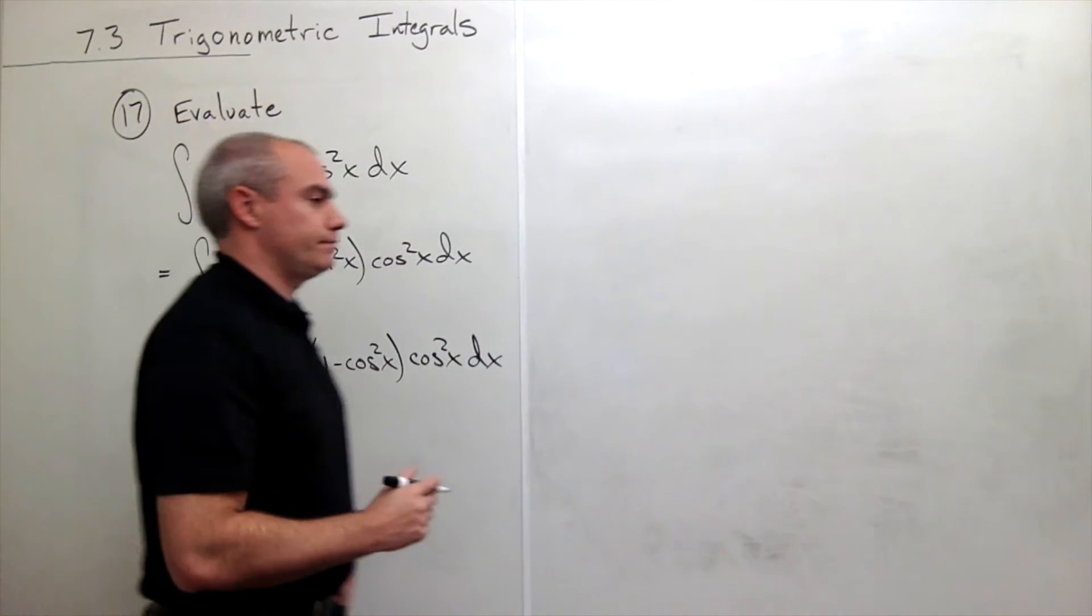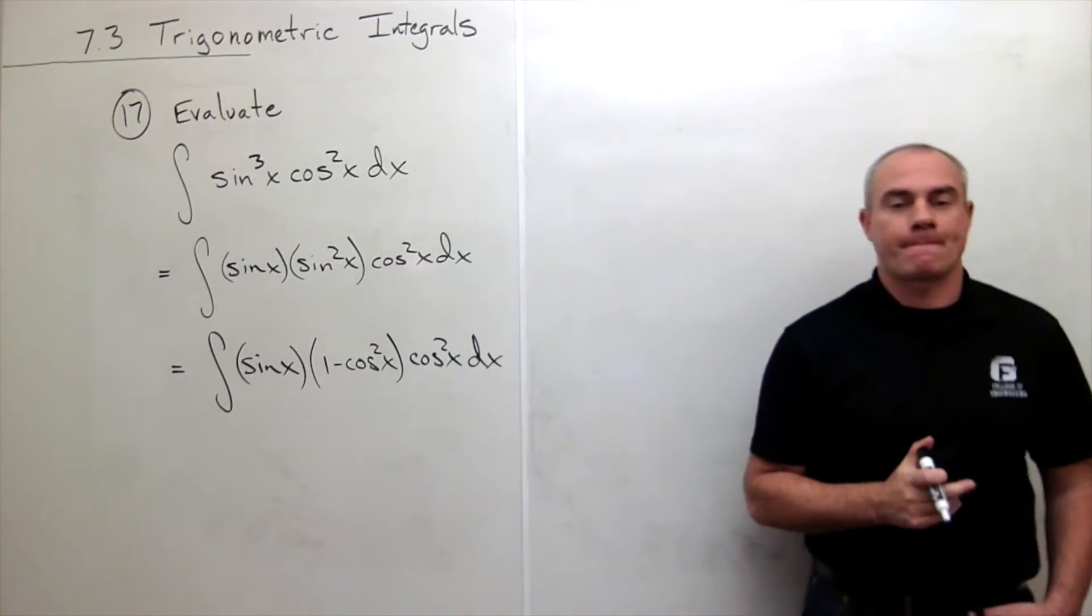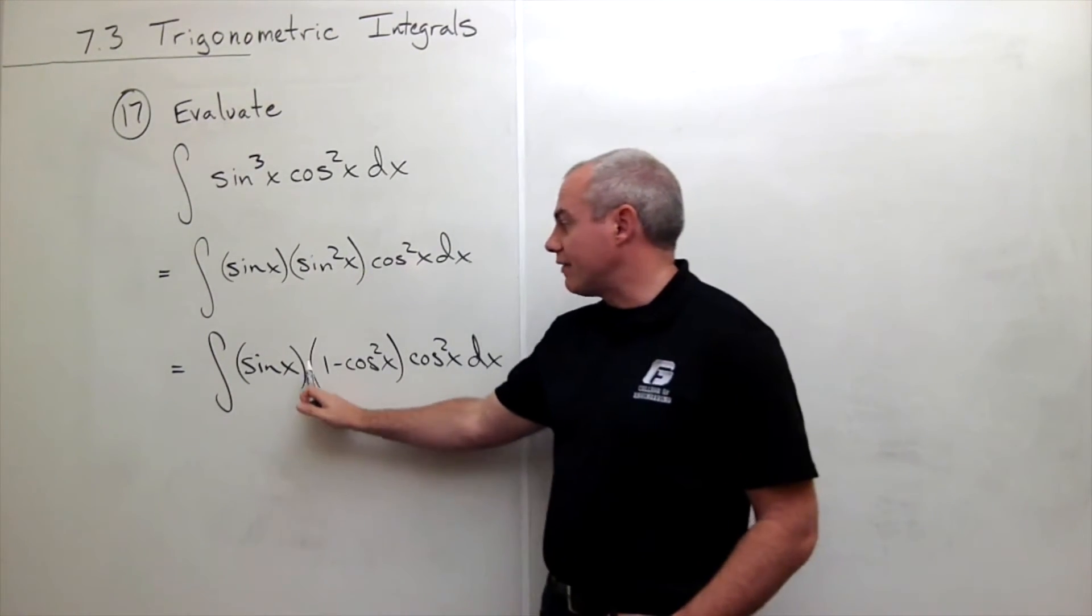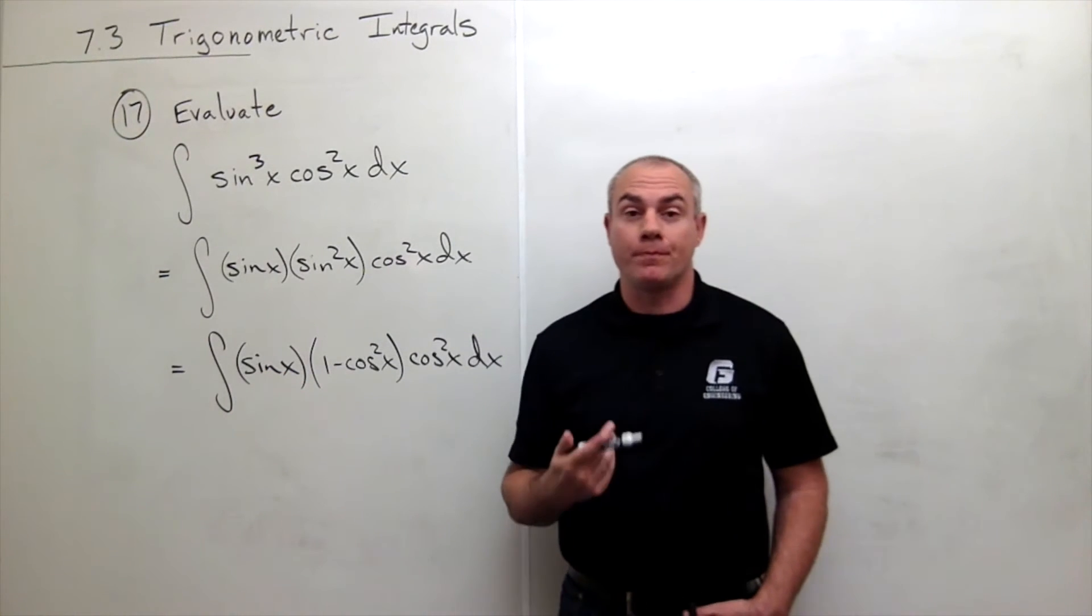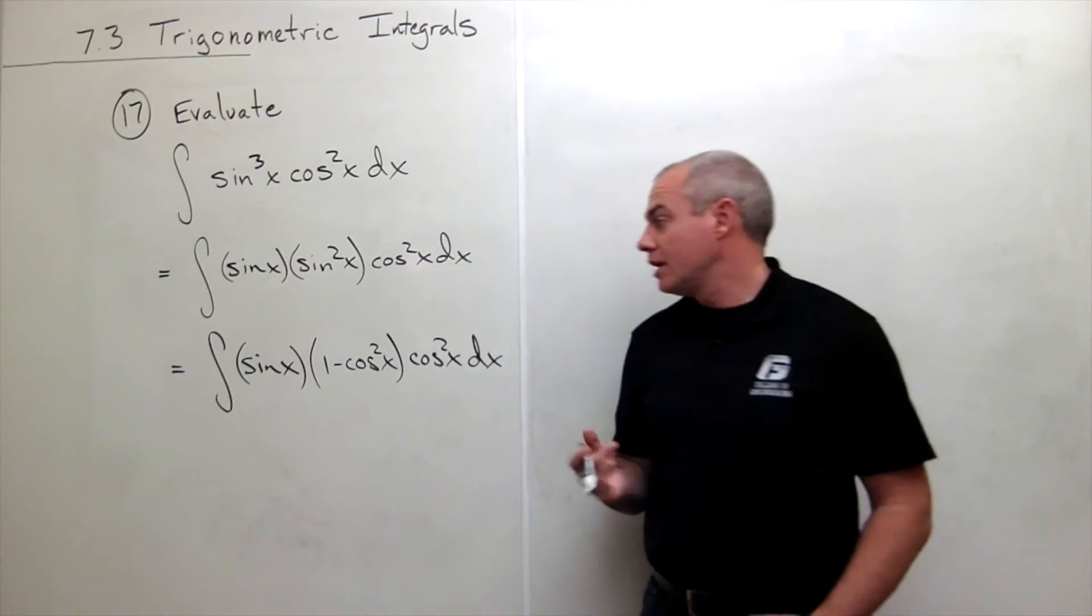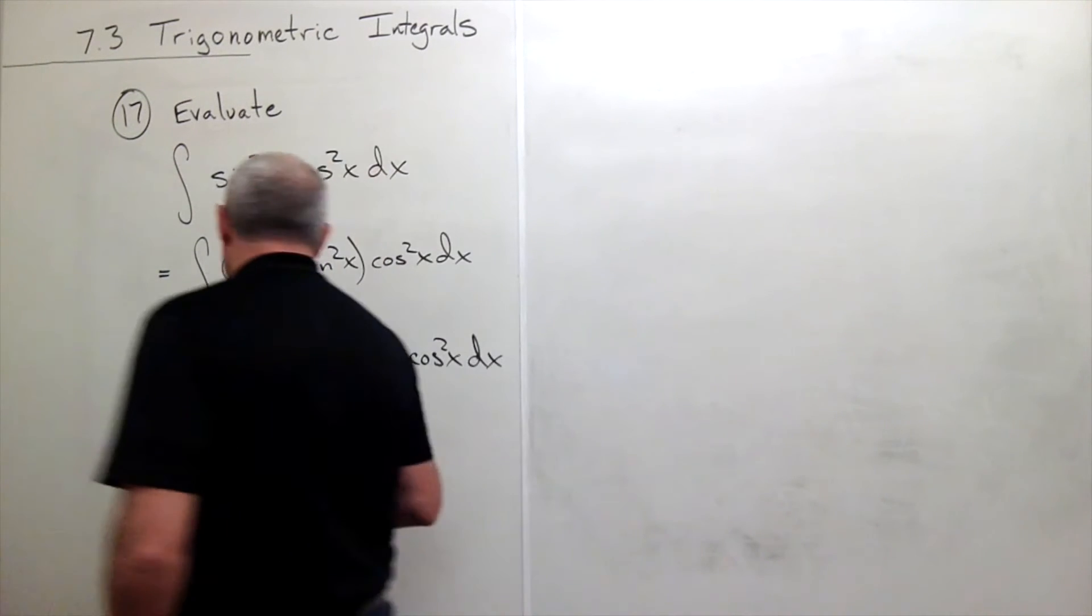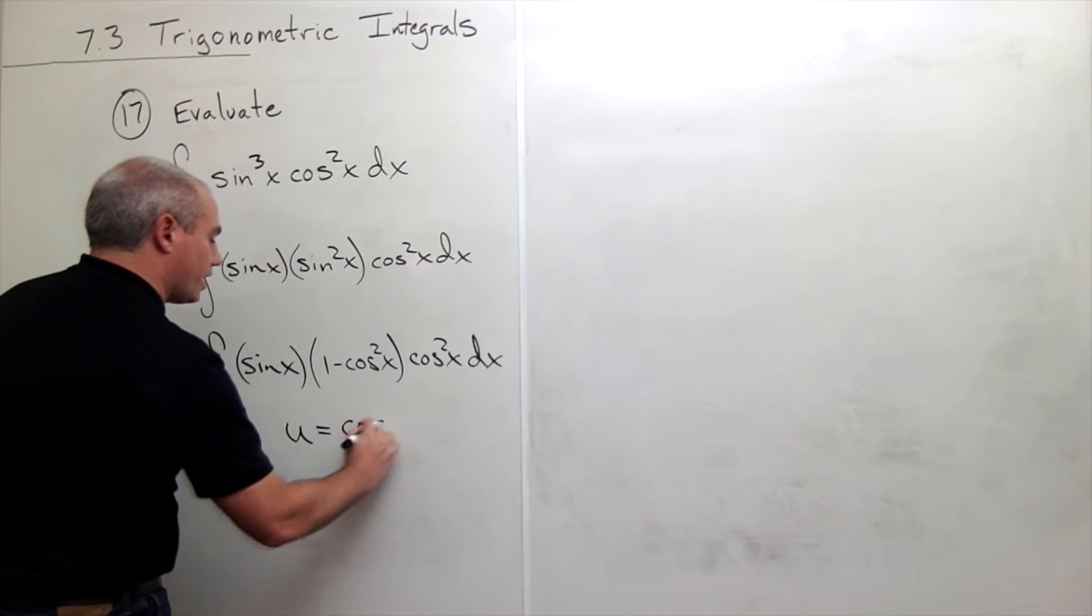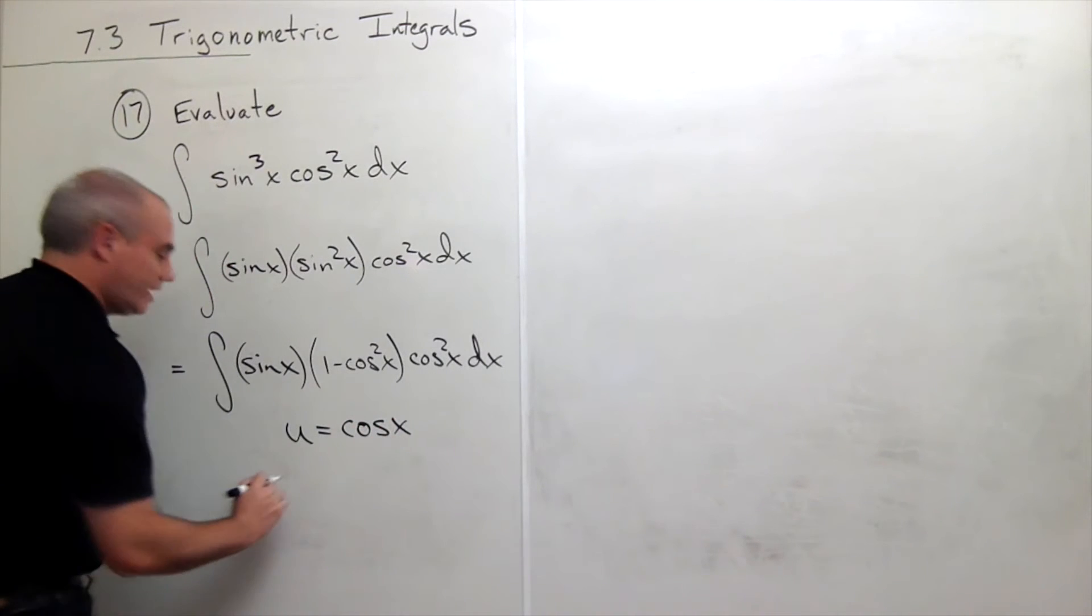The reason I have this sine of x over here by itself is it's going to help me make a substitution. So I'm going to make a substitution. I want to let u now be cosine of x.